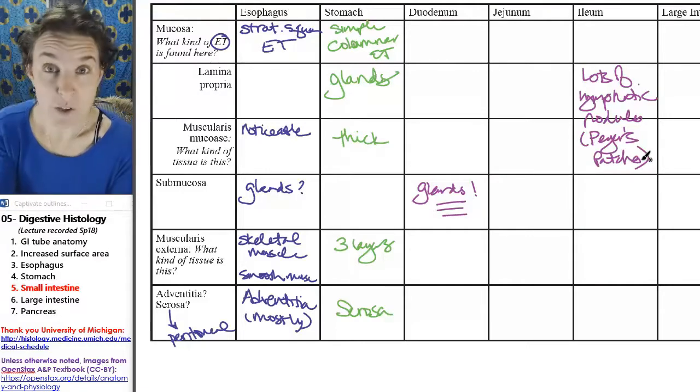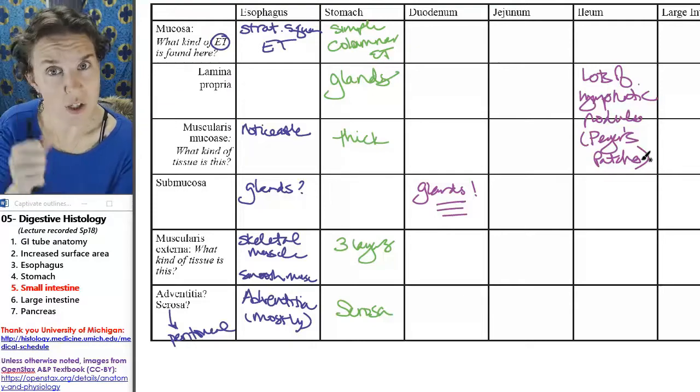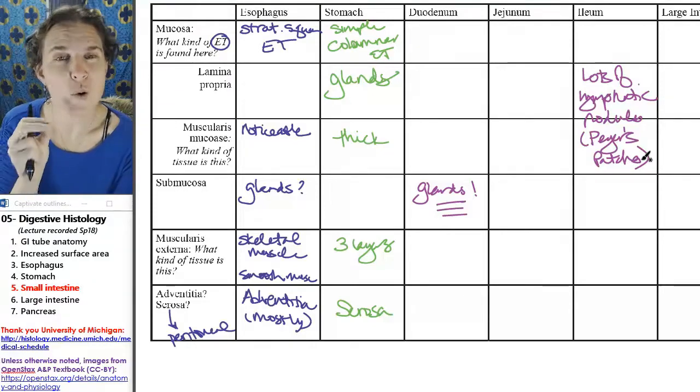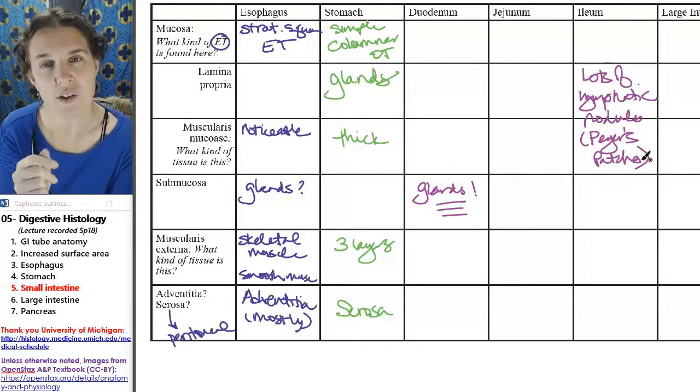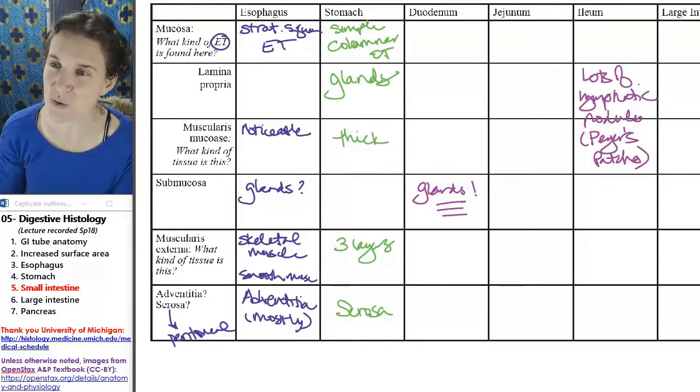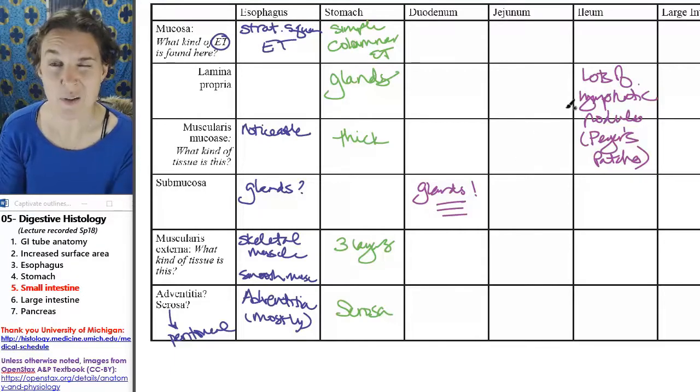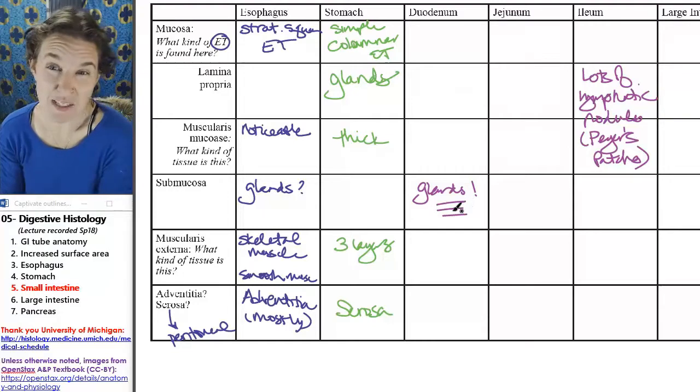So look for lots of lymphatic nodules, you're in the ileum. Look for crazy amounts of glands in the submucosa, you're in the duodenum. Now, the jejunum is a little bit process of elimination. If it's not those other two, then maybe it's the jejunum.